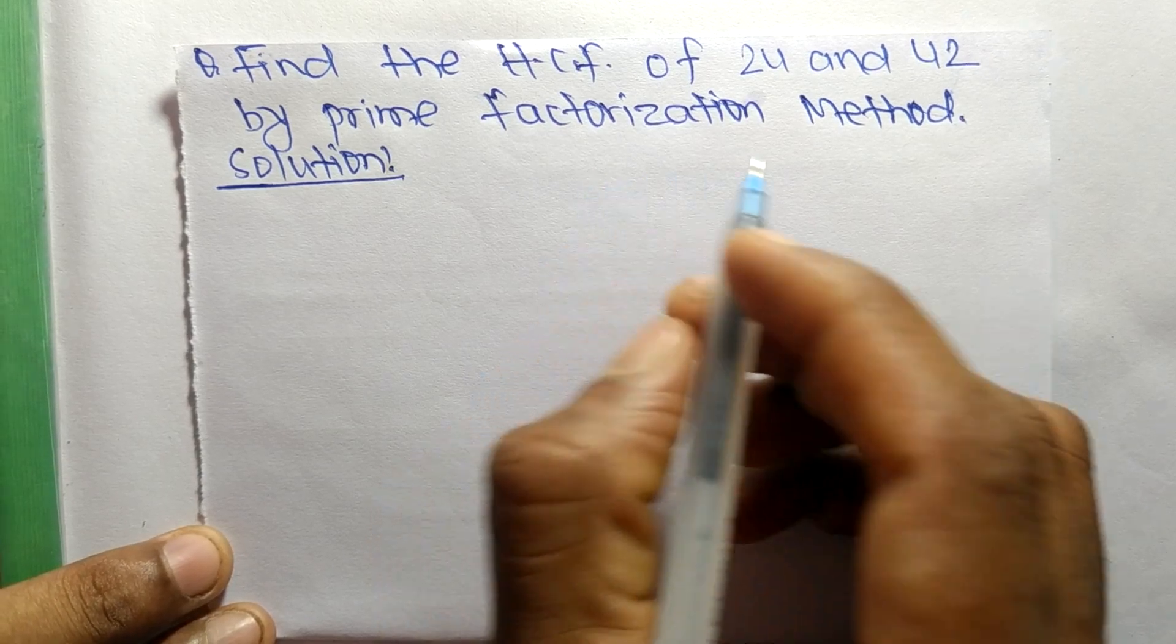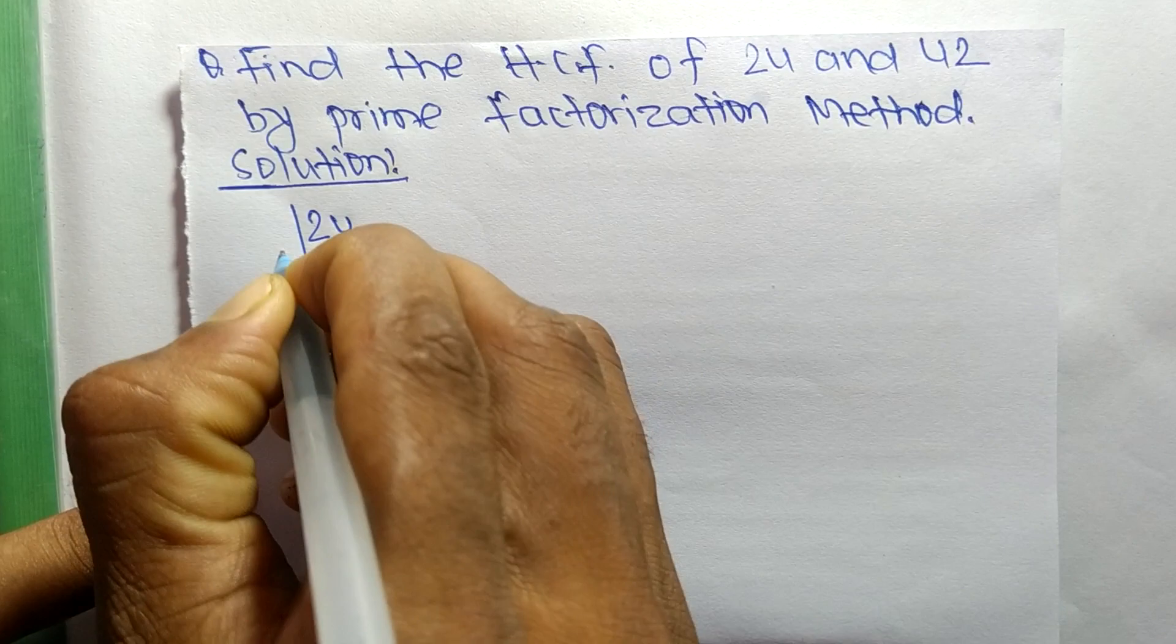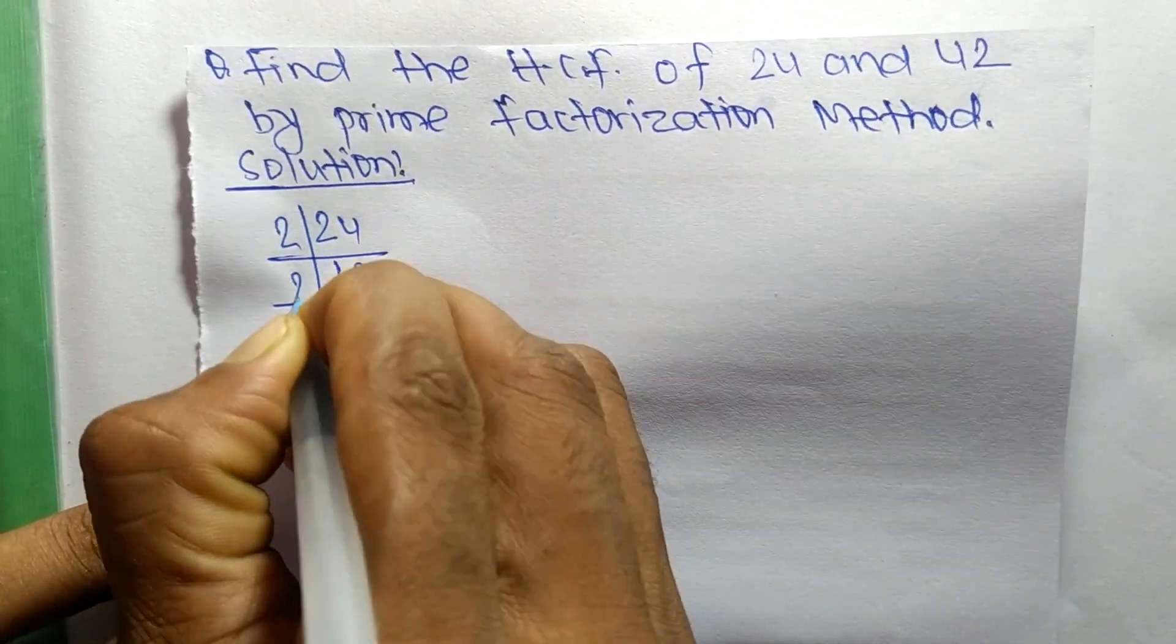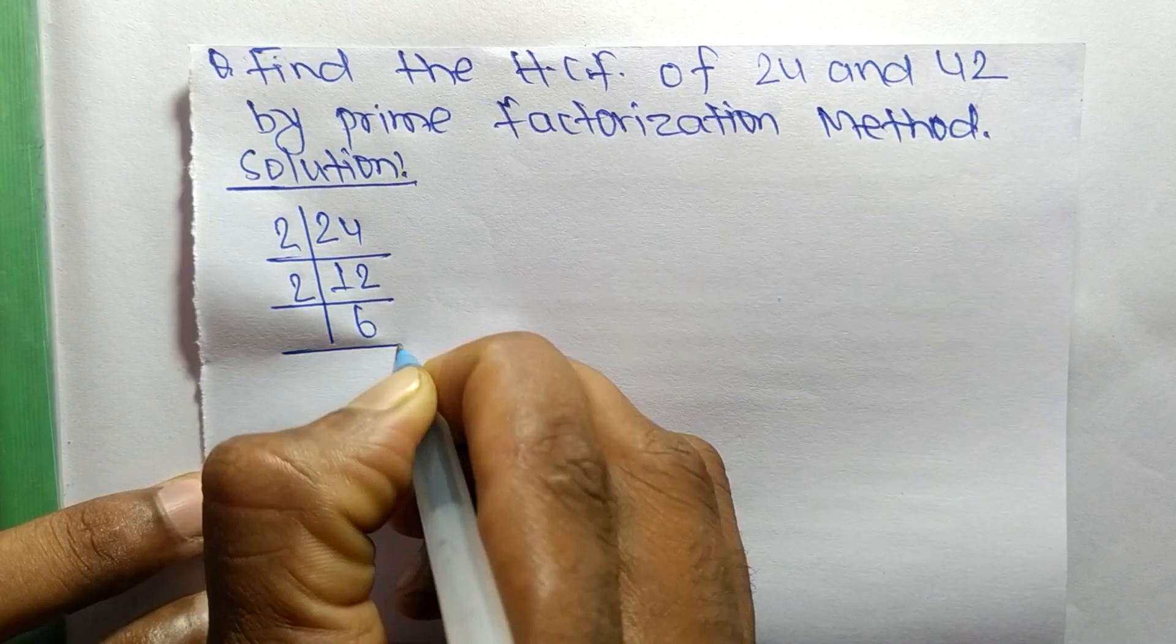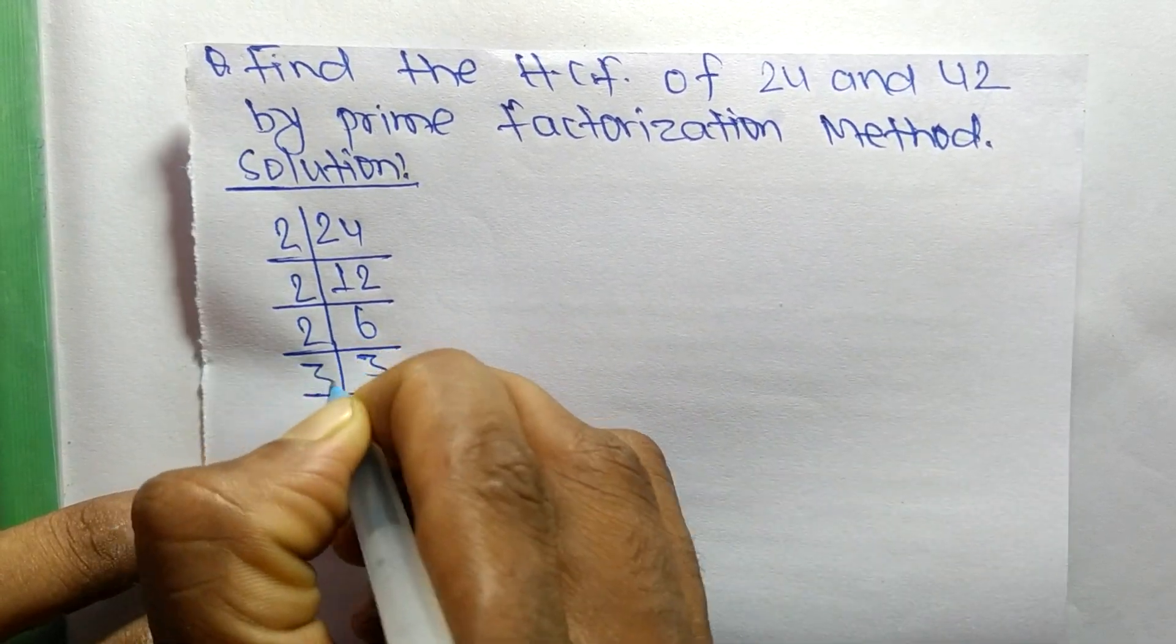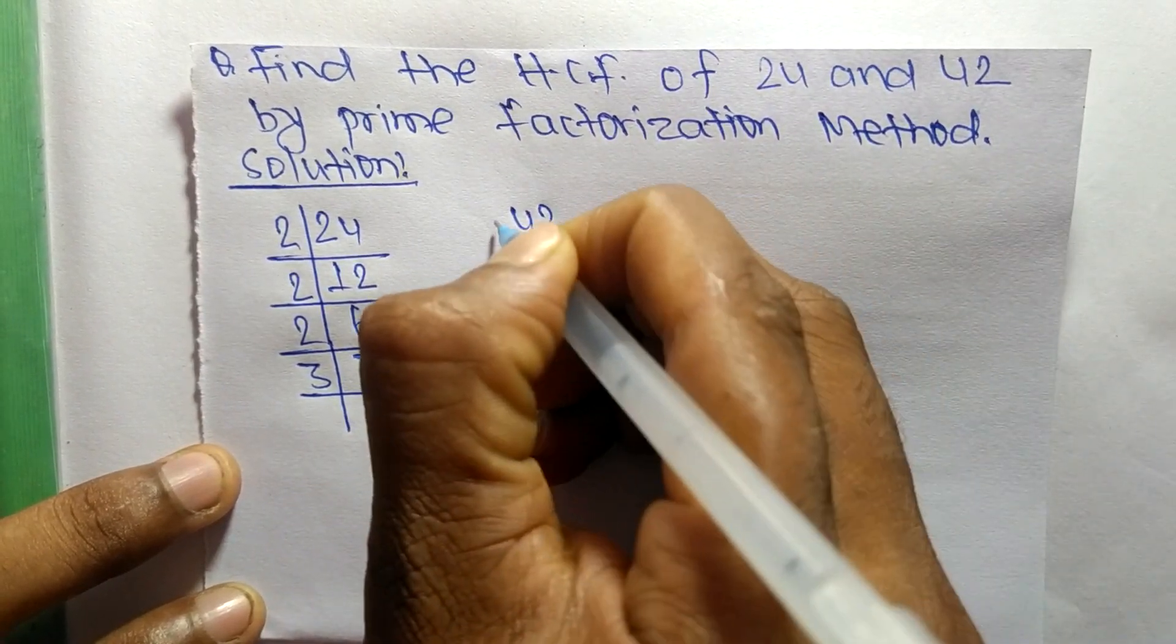So first we find out the prime factors of 24. So it is 2 times 12 equals 24, 2 times 6 equals 12, 2 times 3 equals 6, and 3 times 1 equals 3. Like this, the prime factors.